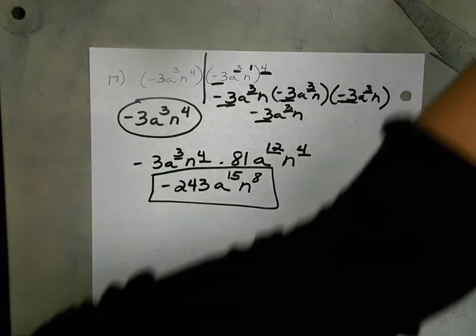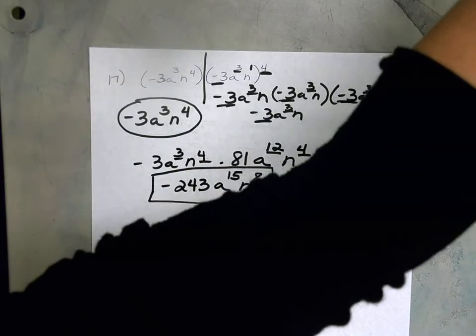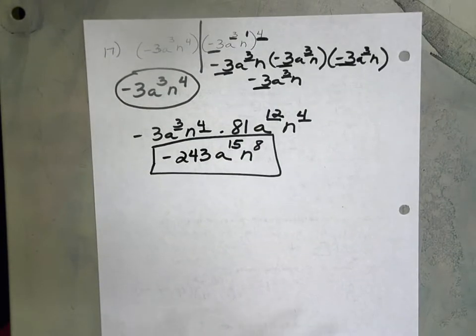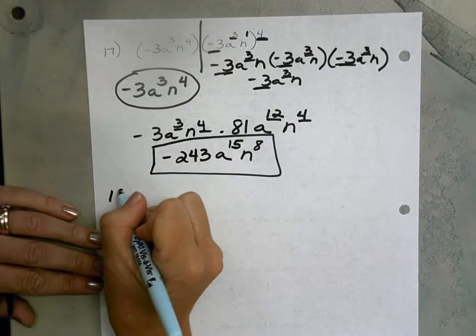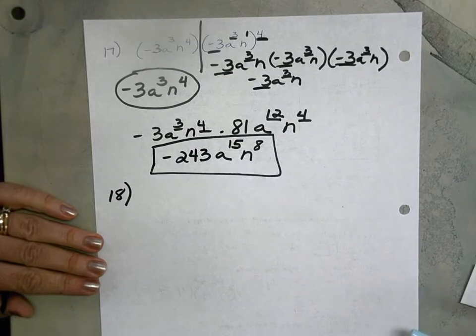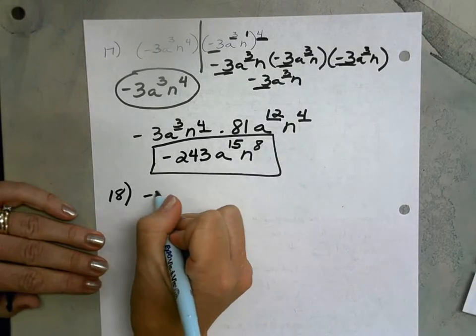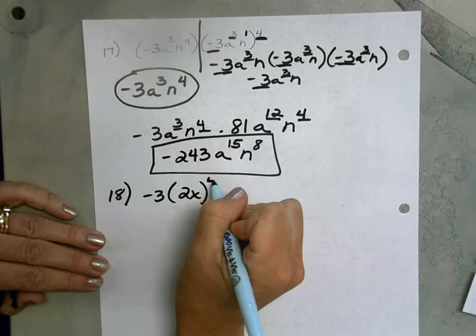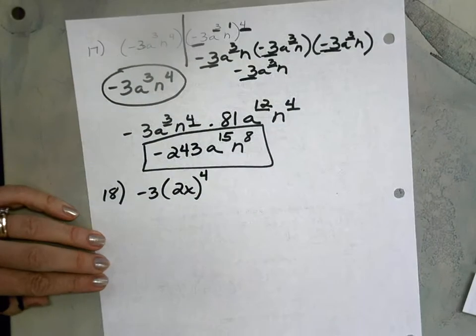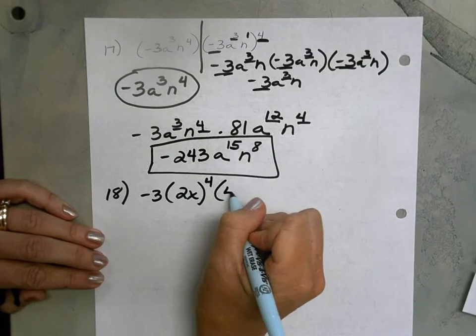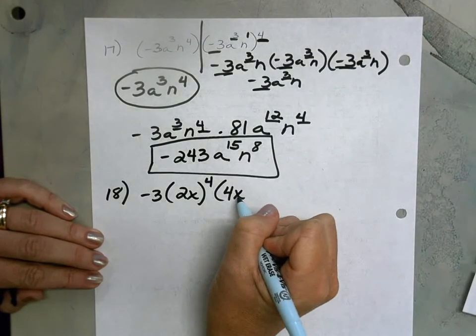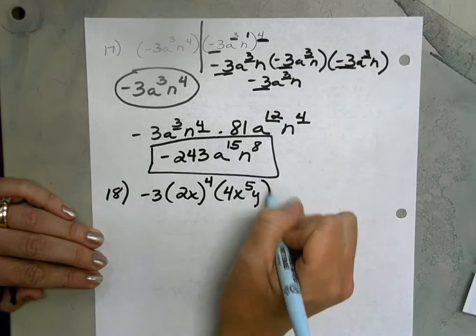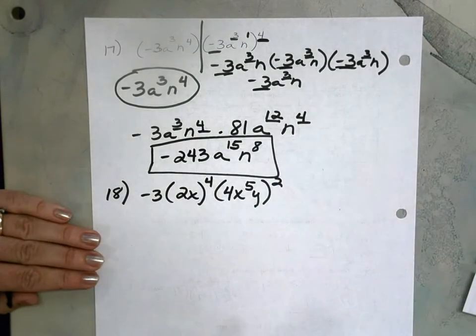Really nice job. Some of our classes, we were able to start number 18. Some classes I think we were able to finish. But for the benefit of everybody, let's also do number 18. And this was negative 3 times 2x. And that monomial is to the fourth power. And then we're going to multiply that by 4x to the fifth y. And that monomial is going to be to the second power.